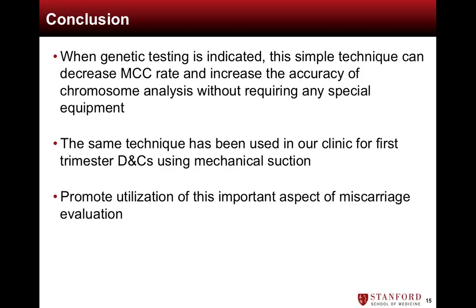In this video, we have demonstrated that when genetic testing of miscarriage tissue is indicated, this simple technique can decrease MCC rate and increase the accuracy of testing without requiring any special equipment. The same technique for identifying villi has been used in our clinic for first-trimester D&Cs using mechanical suction. We hope that by demonstrating this technique, we can promote the utilization of this important aspect of miscarriage evaluation. Thank you for your attention.